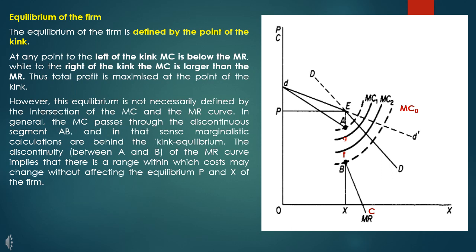From the equilibrium output, we draw up to the demand curve and across to the Y axis to get the equilibrium price level. The discontinuous part of the MR curve is the AB segment. If the marginal cost curve shifts but remains within the AB discontinuous range, the equilibrium price and quantity will not change.